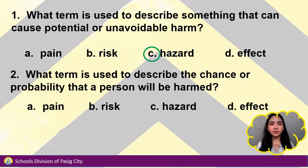Number 2. What term is used to describe the chance or probability that a person will be harmed? A. Pain, B. Risk, C. Hazard, or D. Effect. It's B. Risk.